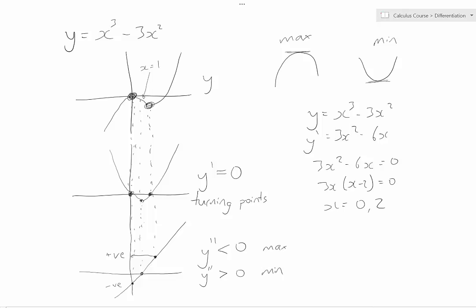And now, what we can do, if we take the second derivative, and this is what we call the second derivative test. I'll write that down for you, second derivative test. And if we take that second derivative, which is going to be 6x minus 6, if we substitute in those two turning point x-coordinates, we can determine the nature of them.